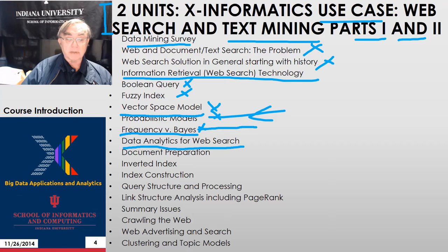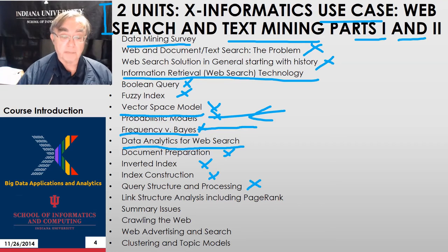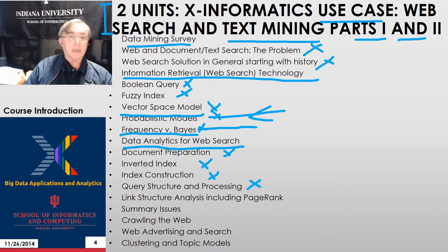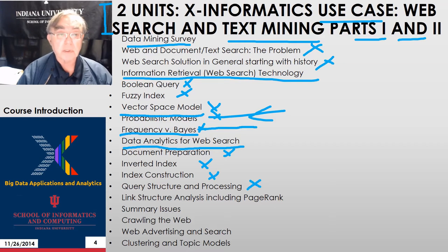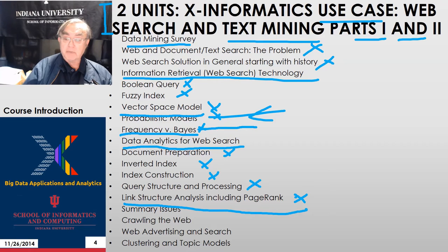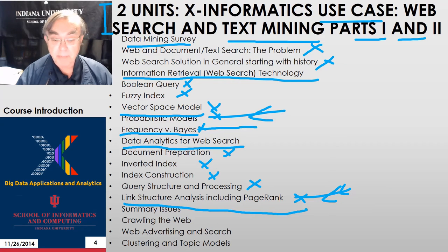We look at data analytics used in web search in some detail: document preparation, forming the inverted index, constructing the index, and query structure and processing. Then we look at very important modern capabilities that come from the use of context — joining all information together. When you type a search, the system knows who you are, where you live, what you do, and what you last did, allowing it to optimize responses. One key technique is link structure analysis for ranking — using the number of links to a page to rank it. That's where PageRank comes from.